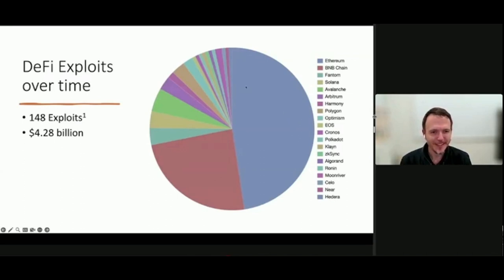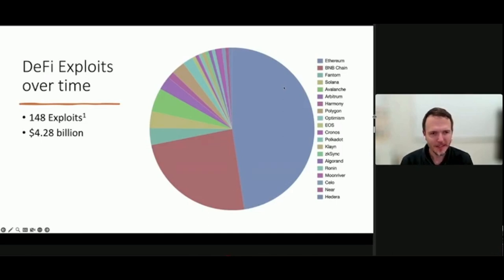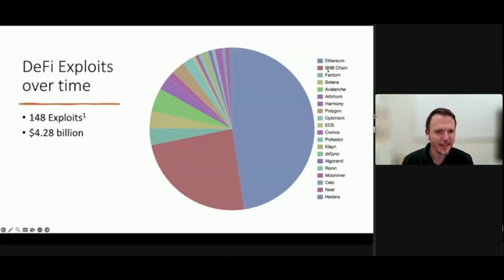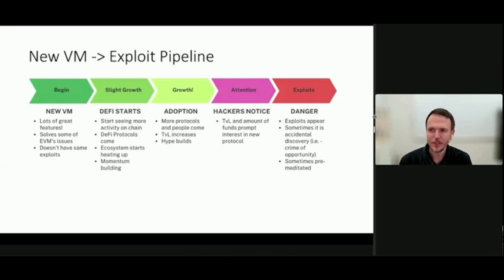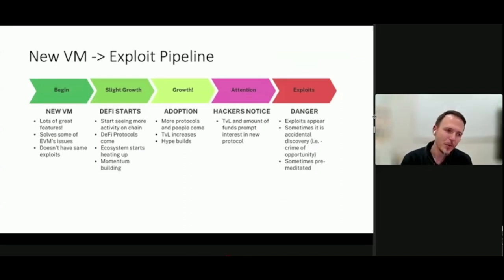You can see DFINITY isn't here, so good job to the DFINITY team. Ethereum makes up the majority. We call the blockchain computer that runs the contracts the virtual machine, which is different for different blockchains. Ethereum and BNB chain share the same compatible VM, so they have the same kinds of exploits. What tends to happen is we see this cycle with new chains — I call it the new VM to exploit pipeline. A new blockchain and VM comes out with great features, it solves some of the EVM's issues, confidence builds, DeFi starts, the ecosystem heats up, TVL increases, and then hackers take note.